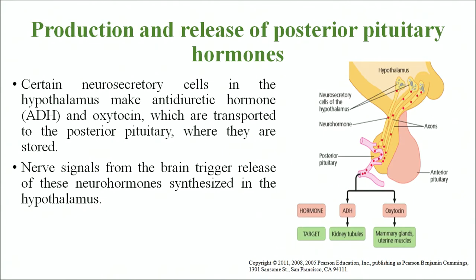The posterior pituitary secretes two major hormones: ADH and oxytocin. Oxytocin induces uterine contraction and the release of milk from the mammary glands. Antidiuretic hormone (ADH) enhances water reabsorption in the kidney. The release of hormones from the anterior pituitary is controlled by hypothalamus releasing and inhibitory hormones secreted by neurosecretory cells, which enter a capillary network that connects via a portal vein to a secondary capillary network in the anterior pituitary.